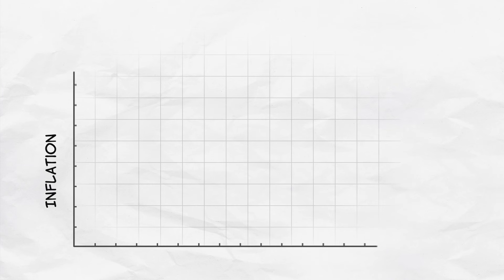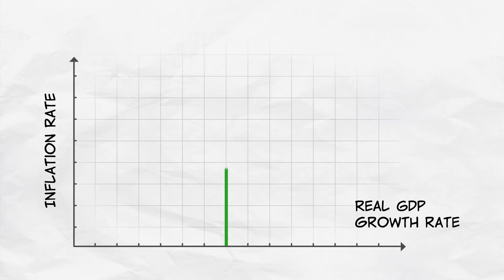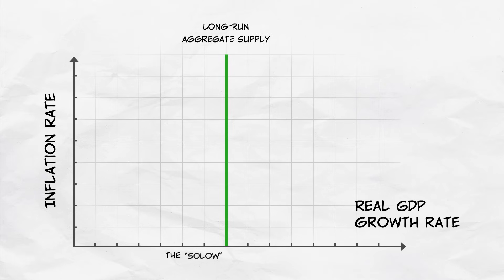Now, do any of these fundamental factors depend upon the rate of inflation? No, at least not in the long run. The long-run aggregate supply curve shows an economy's potential growth rate when all is going well. It's very simple — just a vertical line at the economy's potential growth rate, or Solow growth rate, the rate given by the fundamental factors of growth.